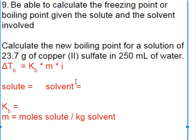Calculate the new boiling point for a solution of 23.7 grams of copper(II) sulfate in 250 milliliters of water. Your solute needs to be in moles. Your solvent needs to be in kilograms. The equation we're using is ΔTb equals Kb times m times i.